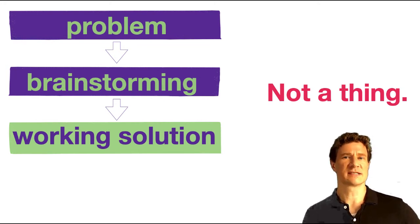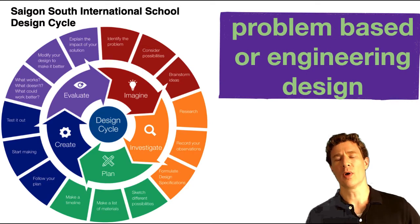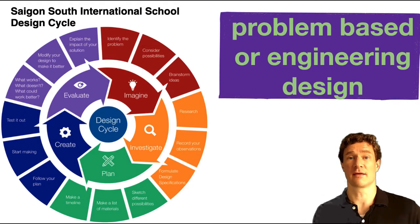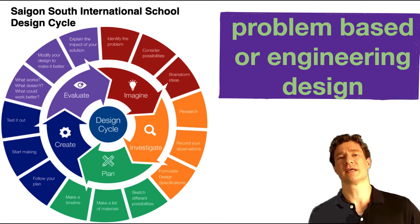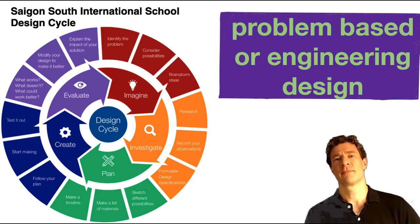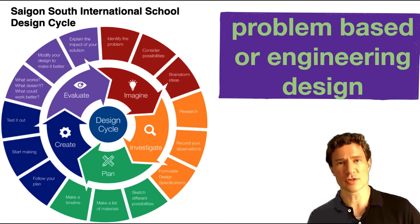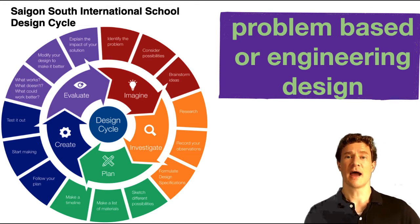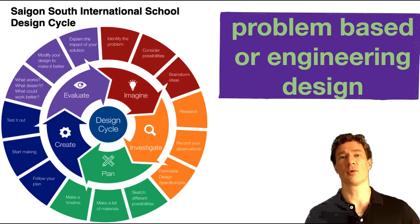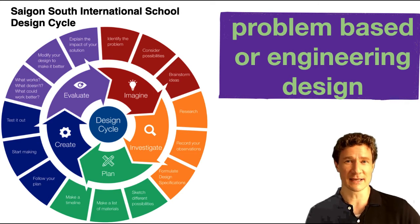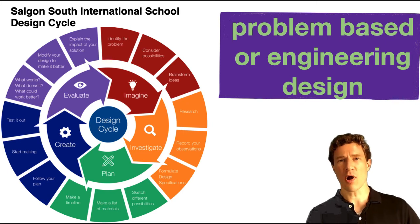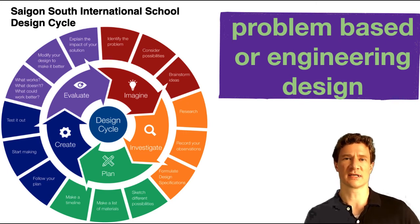There are a couple of different processes that are used for design. One is problem-based or engineering design. The idea is that you identify a problem that's out in the world, you do some research to learn as much as you can about it, you create a solution, you test it, and then you continue the cycle forward as that testing most likely didn't work perfectly the first time. This has at its core a problem that drives the entire design process forward.